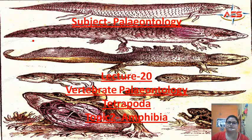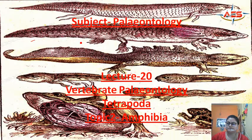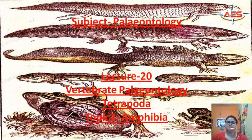Today we will study about amphibians. In the previous class, we have studied about agnathas and gnathostomatas. Agnathas were jawless fish, and gnathostomatas were jawed fish.